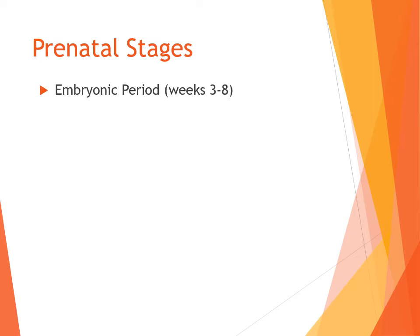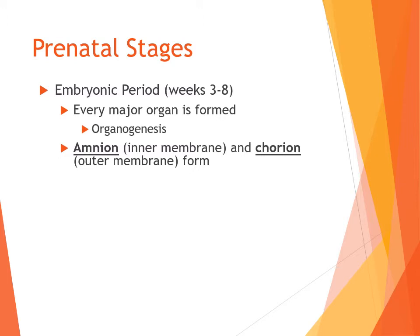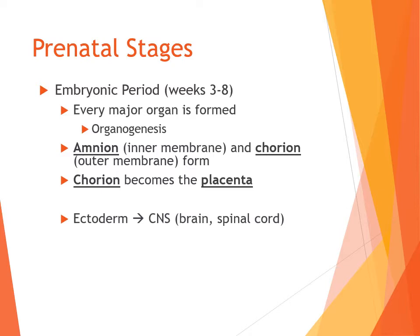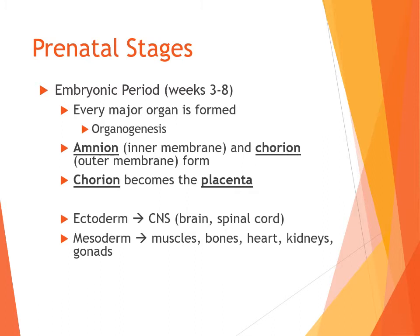In the embryonic period, which lasts from about weeks three to eight, every major organ is formed. The membranes surrounding the blastocyst form into organs. We have the amnion (inner membrane) and the chorion (outer membrane). The chorion eventually becomes the placenta, which nourishes the developing fetus. Parts of the amnion develop into the ectoderm — which becomes the central nervous system — the mesoderm, forming muscles, bones, heart, kidneys, and gonads, and the endoderm, forming organs like intestines, lungs, and bladder.